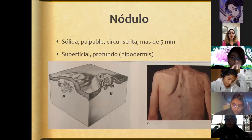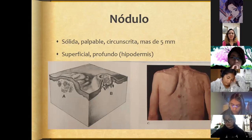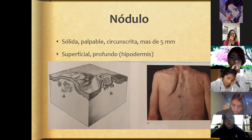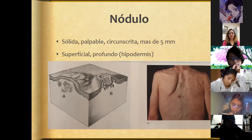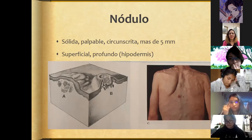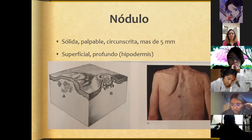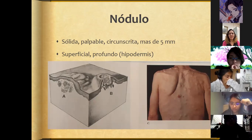Nodules are solid, palpable, circumscribed neoformations measuring more than 5 millimeters — exceeding what we would consider a papule. The inflammation can be at superficial levels in the superficial dermis or even in the hypodermis. The nodule is observed as a solid, palpable, circumscribed formation of more than 5 millimeters — we touch it and can determine where it starts and ends. It can be superficial or deep.